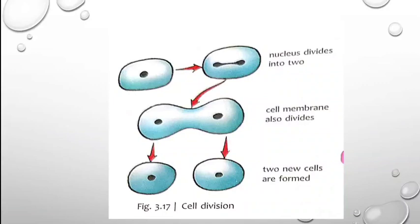One cell divides into two daughter cells, and again these two daughter cells will start dividing into two parts — then it will become four, then eight, and likewise they will keep on dividing and re-dividing. Cell division is important because it results in the growth of the organism.